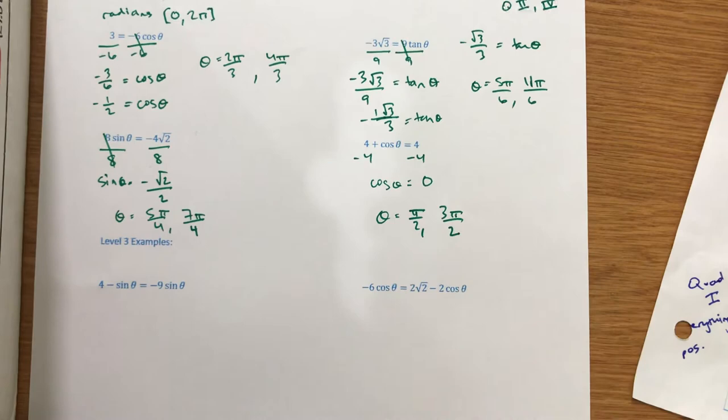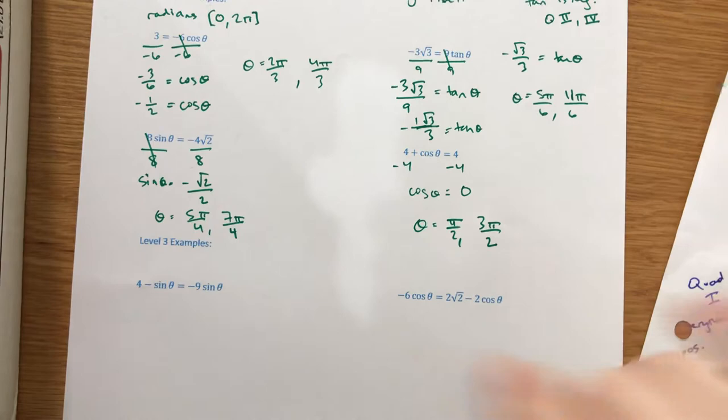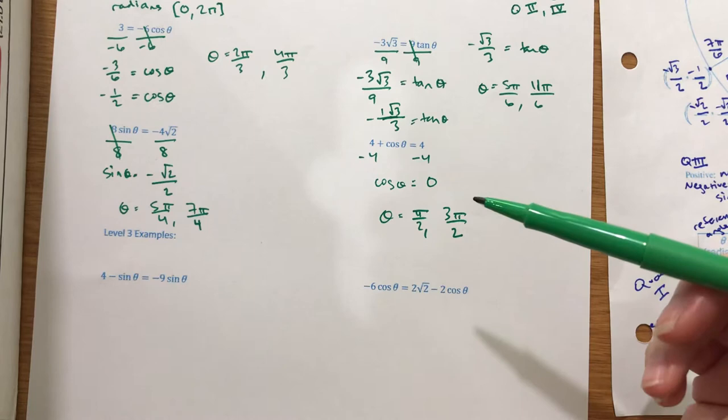These are the Level 2 examples — just one-step solving. Sometimes you have to reduce the fraction, but the trick is it should always reduce down to something on your table. It should always reduce down to something you can glance at here, find the radian, and locate it on your unit circle. If it's not reducing down to something on your table, check your work and make sure it's reducing properly.